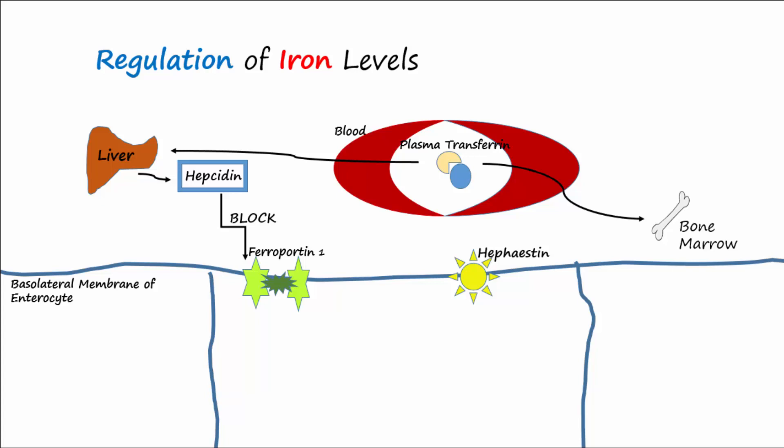When body stores of iron are high and erythropoiesis is normal, the liver will produce more hepcidin. As the duodenal epithelial cells slough off, intracellular iron will be lost in the feces.